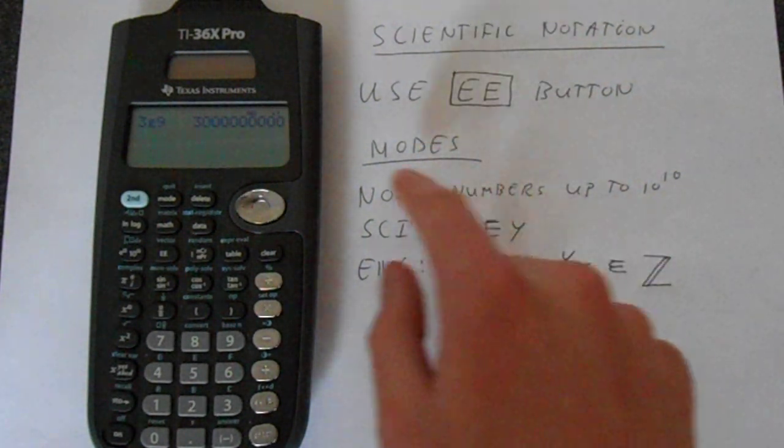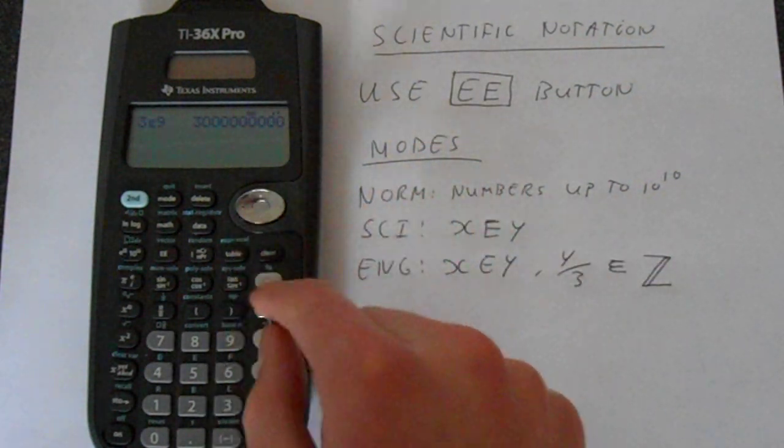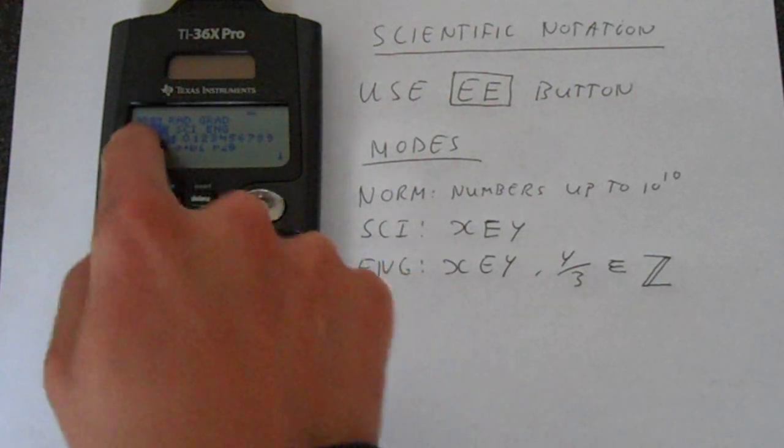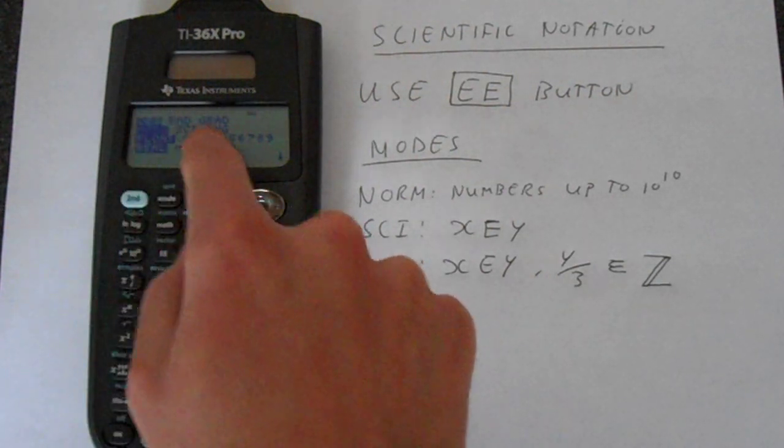And there's three different modes. We've got NORM mode. So if you go to mode, you'll be given this choice in the second line: NORM, SCI, and then ENG.